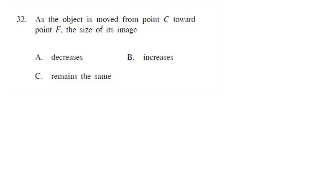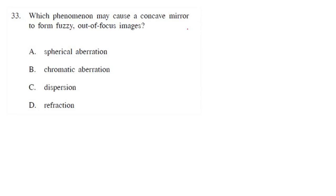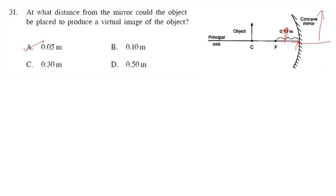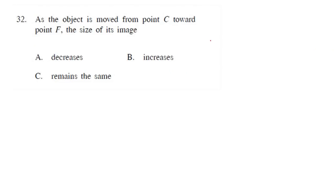As the object is moved from point C towards point F, the image goes to infinity and becomes highly enlarged. When the object is brought to focus, the image becomes highly enlarged. So the size of the image increases.